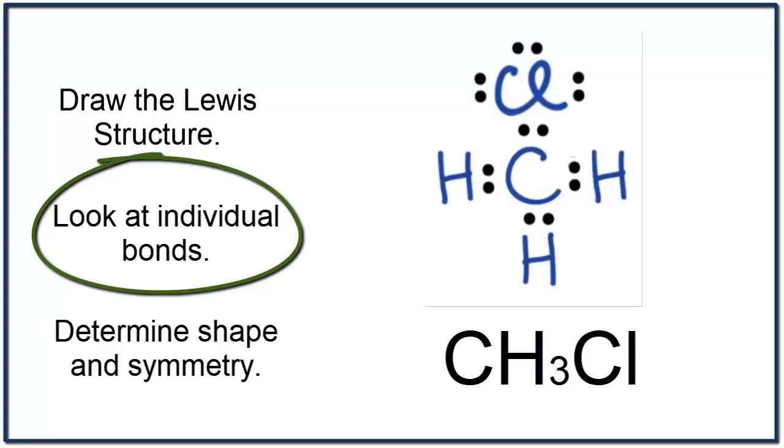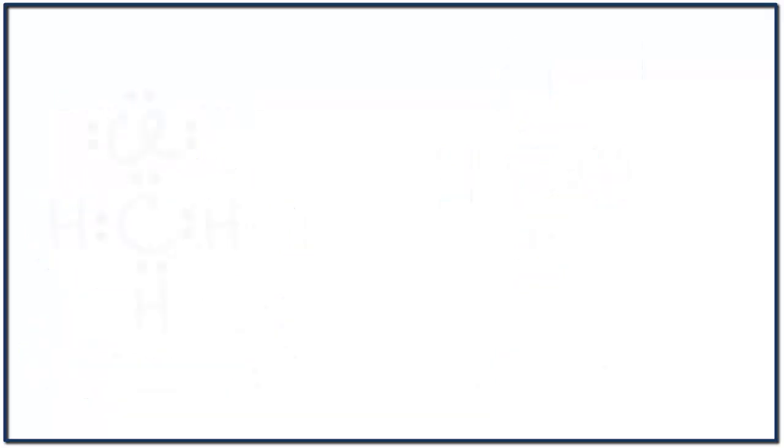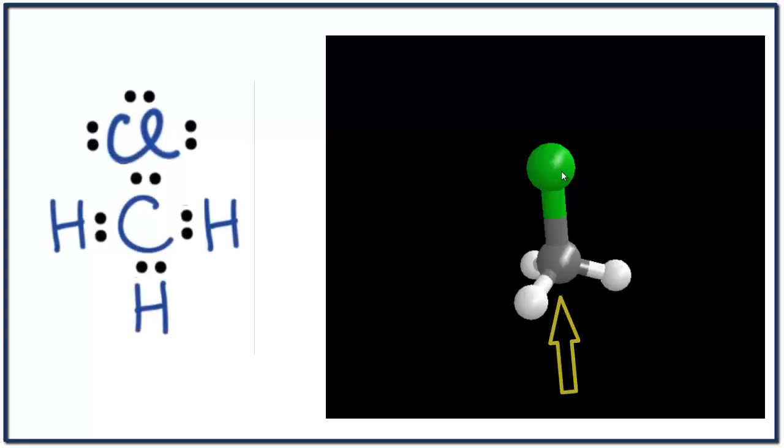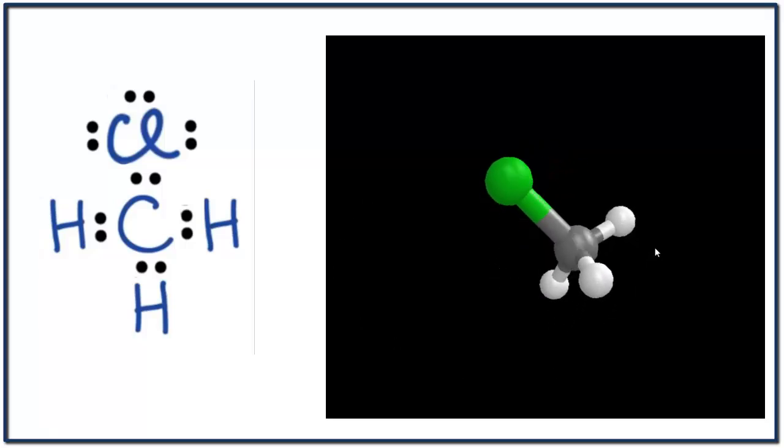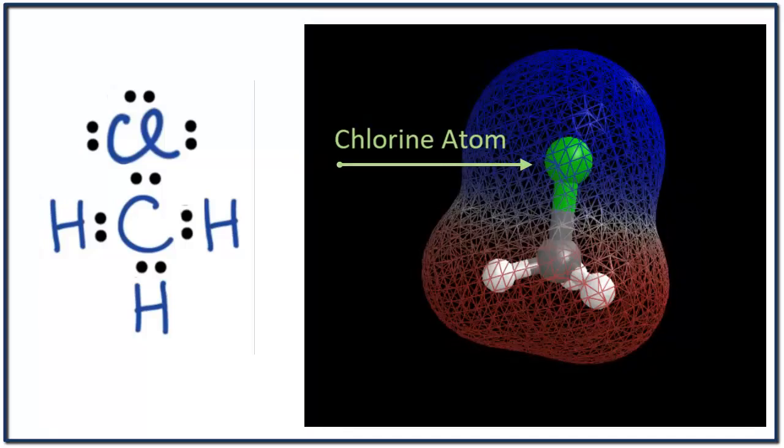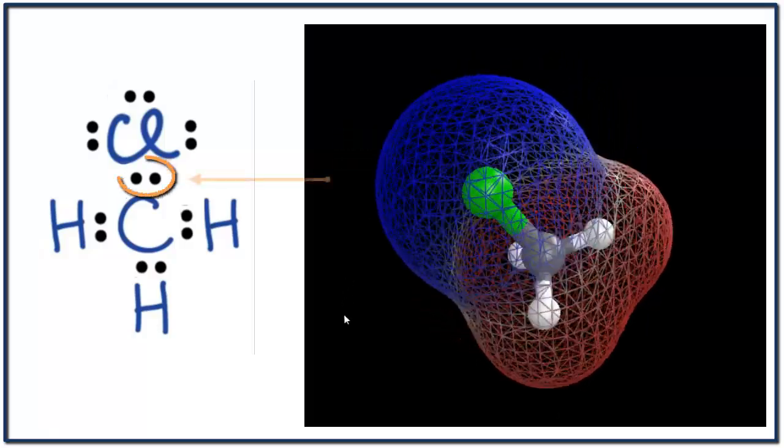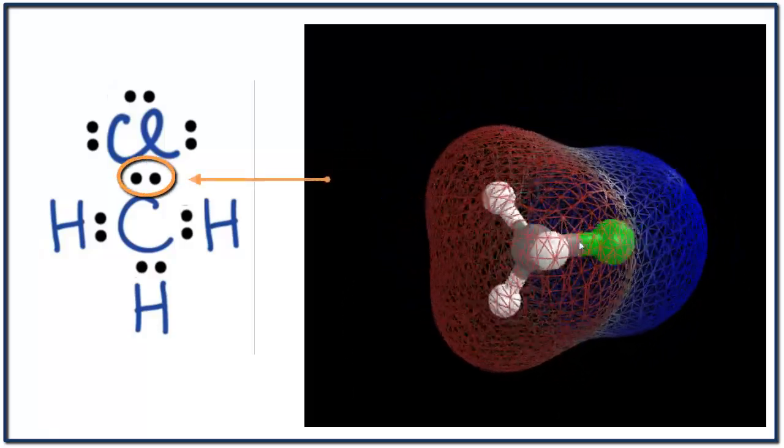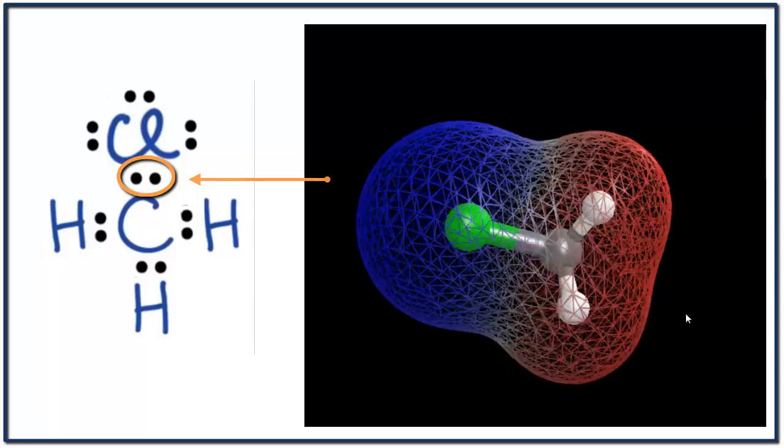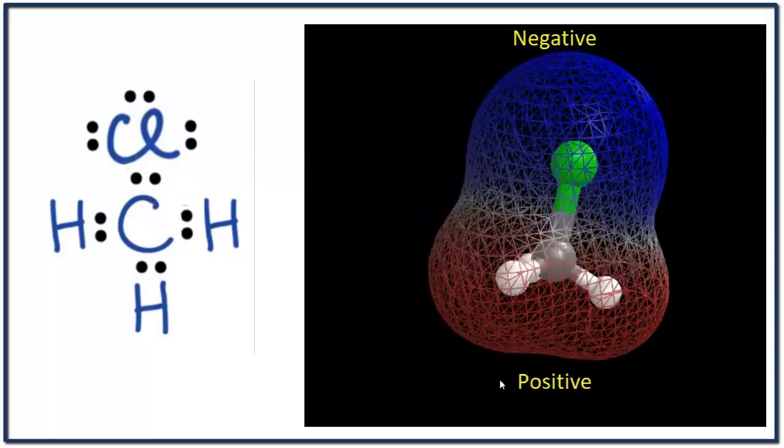So with our Lewis structure, we can take a look at the actual shape of the entire molecule. We see we have the carbon with four atoms attached, and we know those are going to spread out and form a tetrahedral structure. We can see that we have two sides to this molecule. We have a side with the chlorine atom, which is more electronegative, and that means those shared electrons between the chlorine and the carbon will spend more time around the chlorine atom, making it more negative. That means we have a negative pole and a positive pole and a polar molecule.